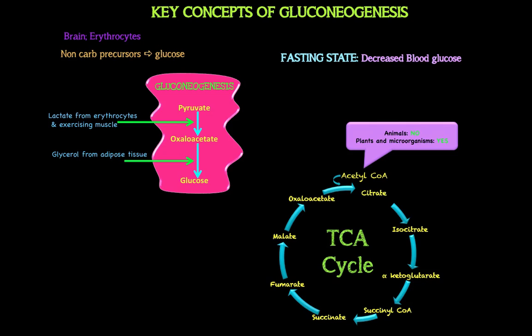Plants and certain microorganisms can use acetyl-CoA as a glucogenic precursor because they have extra enzymes that run another pathway called the glyoxylate pathway. As a hint, it all has to do with making more oxaloacetate — you can look that up for more details.